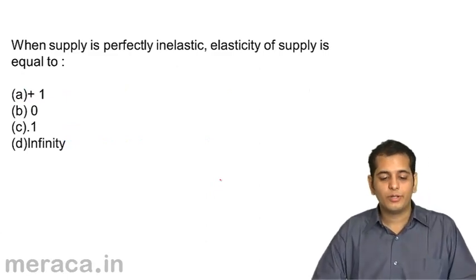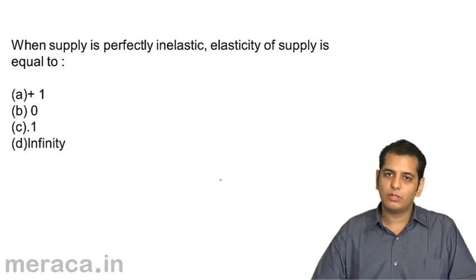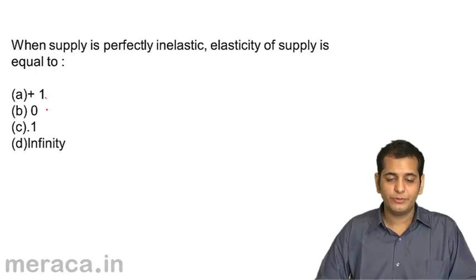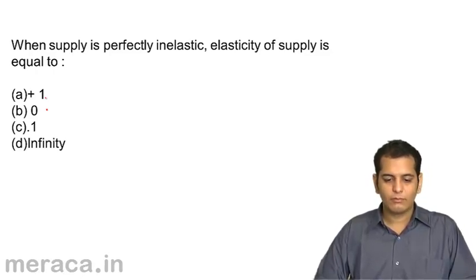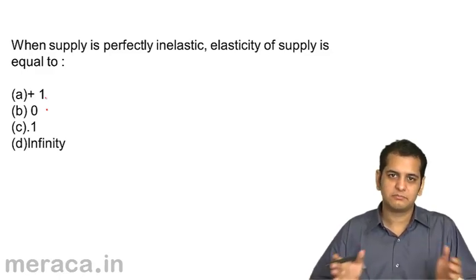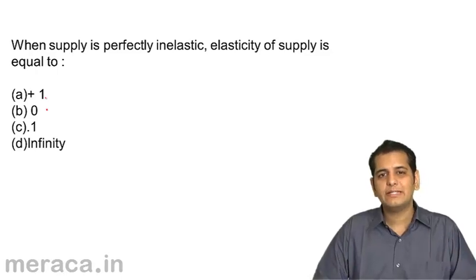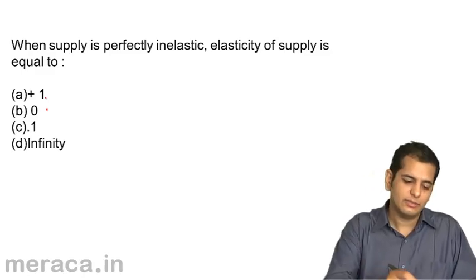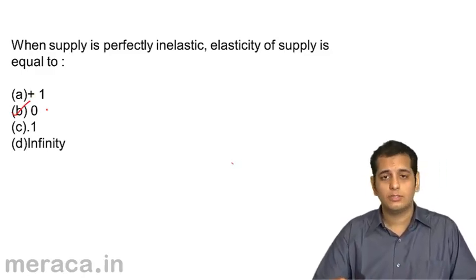Third question: when supply is perfectly inelastic, elasticity of supply is equal to — A: plus 1, B: zero, C: minus 1, D: infinity. Perfectly inelastic means there is no change in quantity supplied. When there is no change, the elasticity value is always equal to zero. So the answer is B — zero.